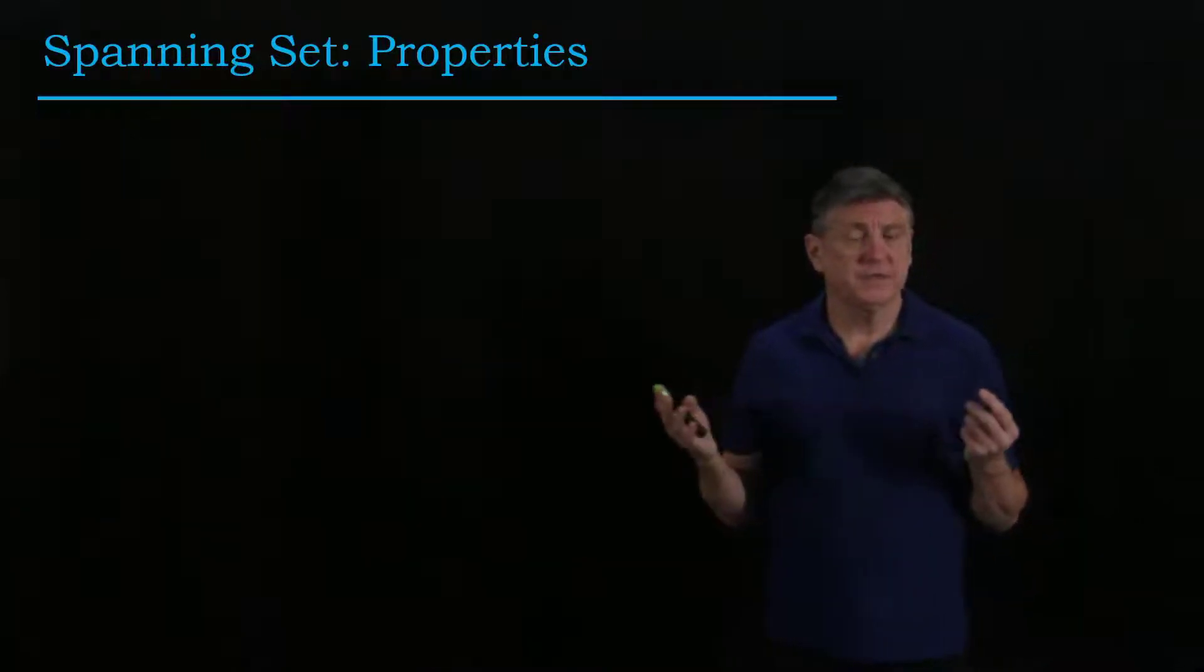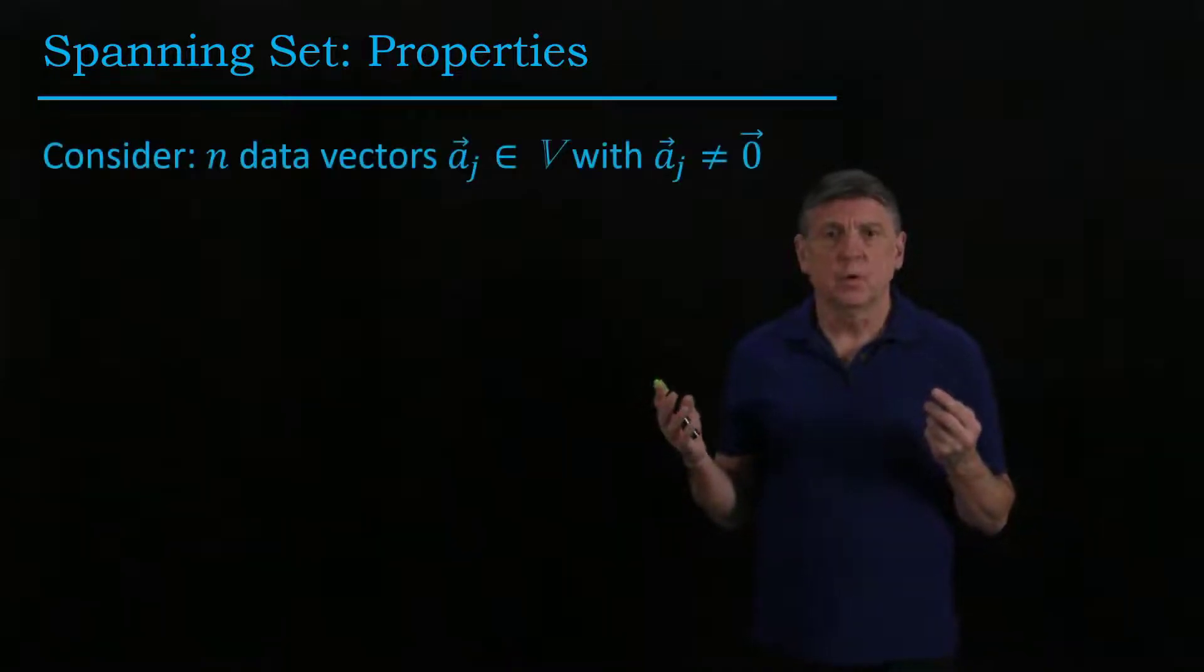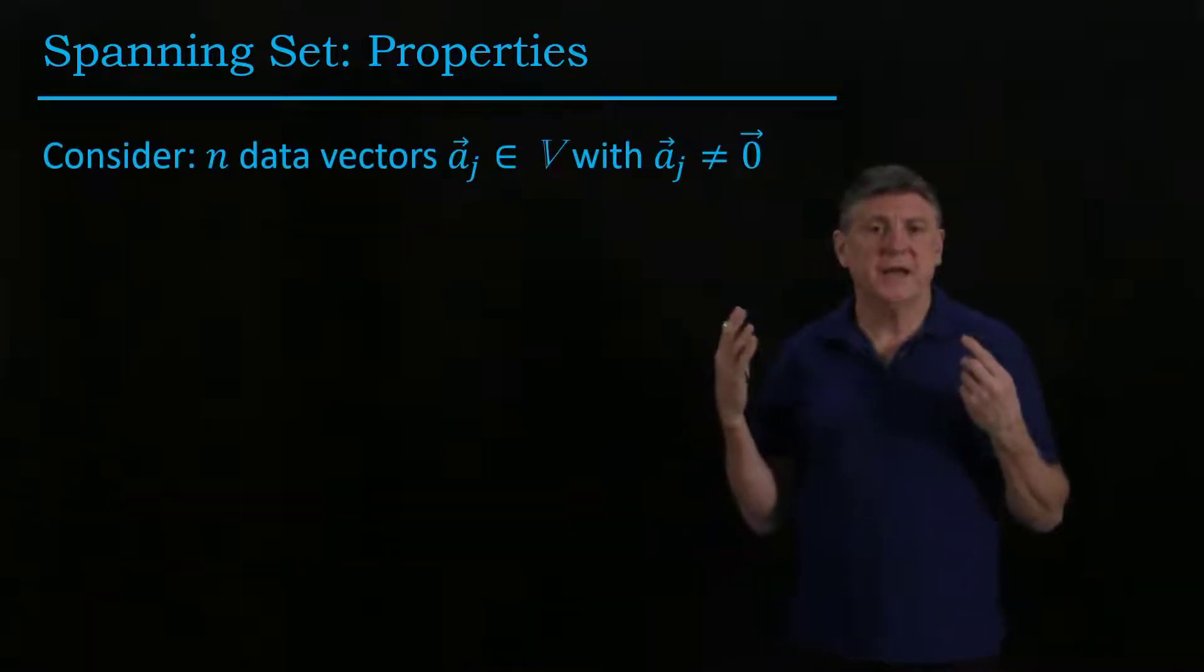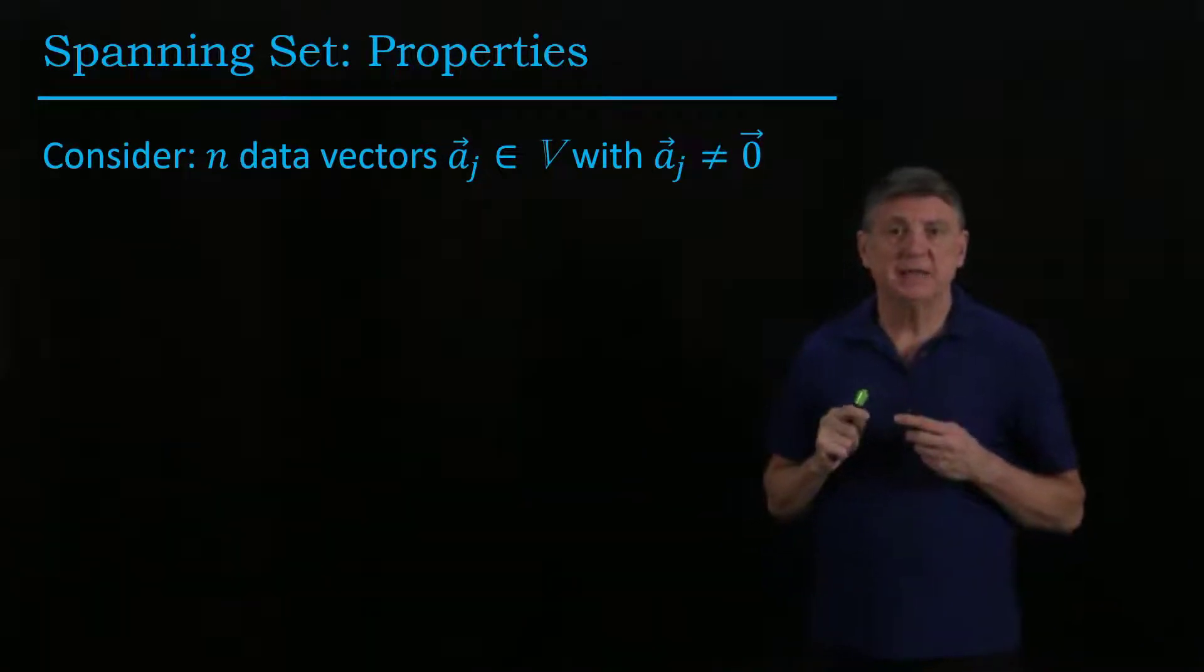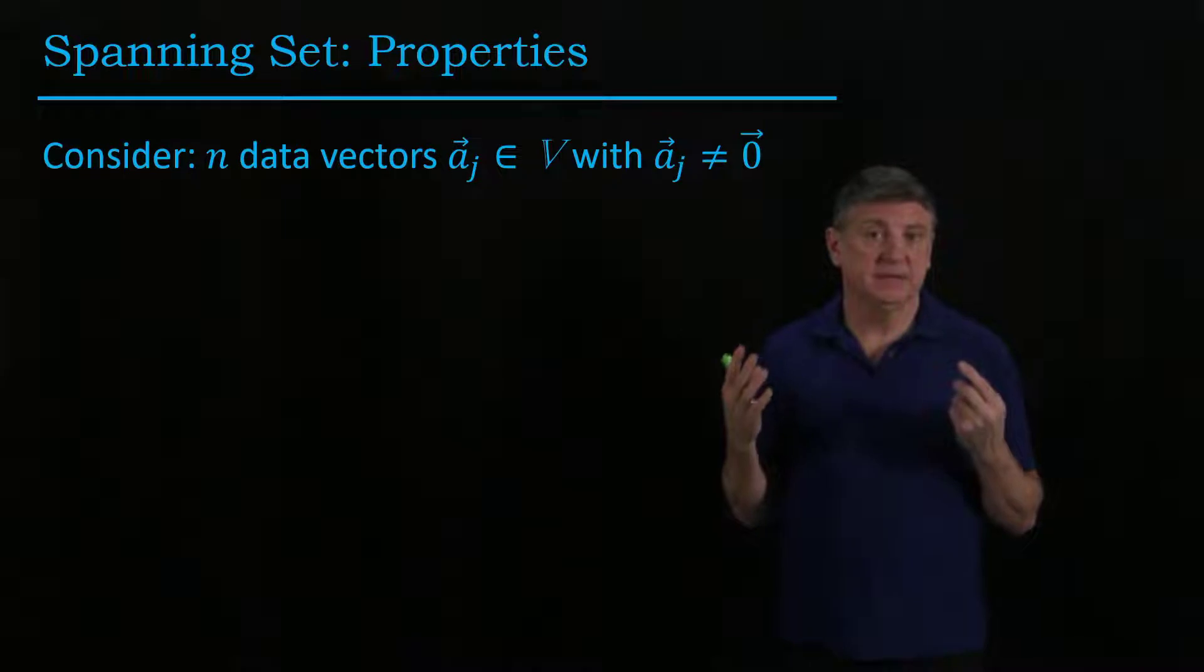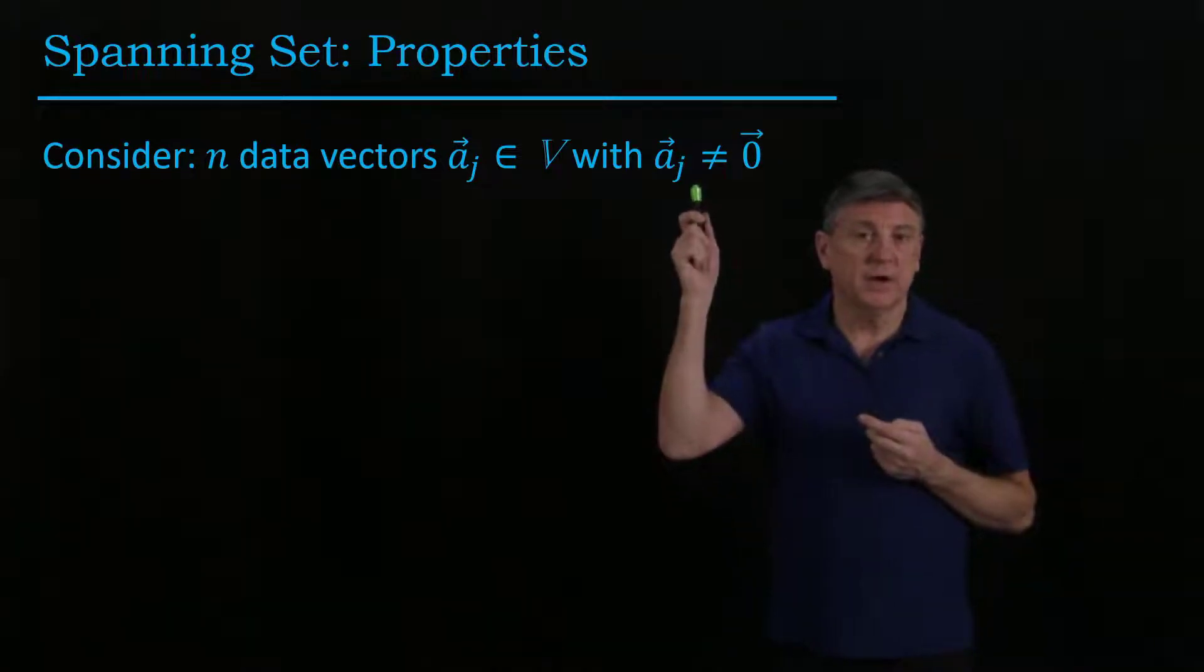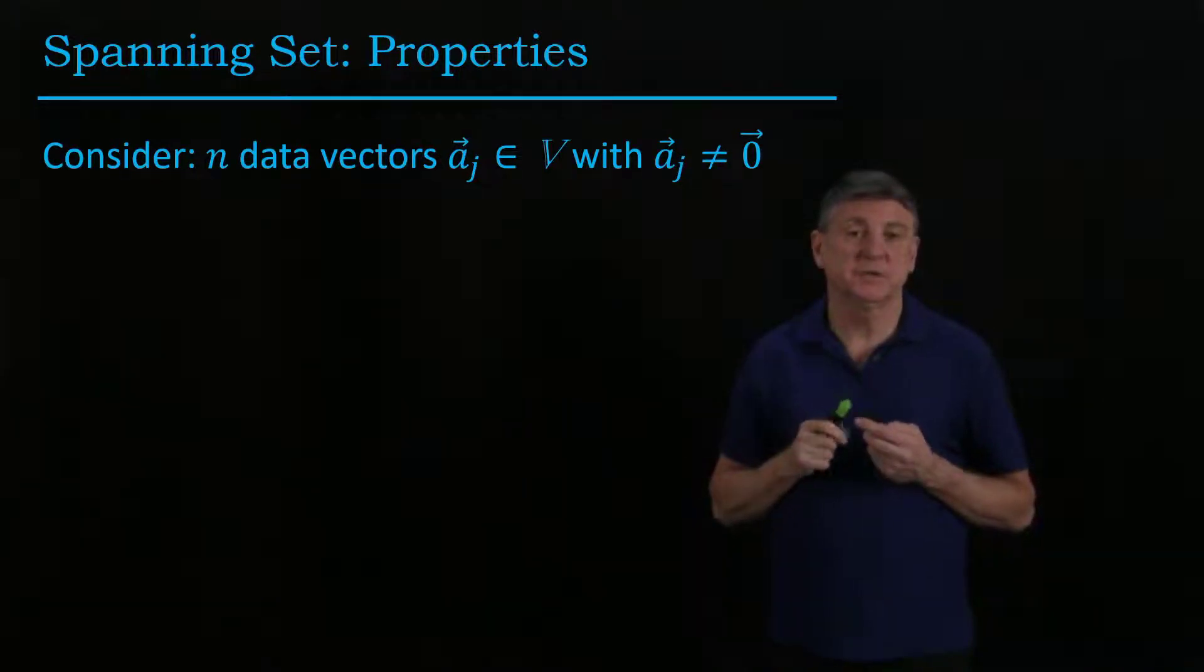What properties does a spanning set have? Suppose we have a vector space V with n data vectors ā_j ∈ V that span the space. We'll require that none of these be zero, because zero vectors cause problems.